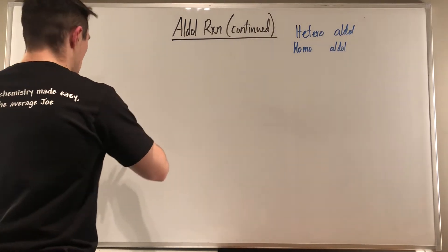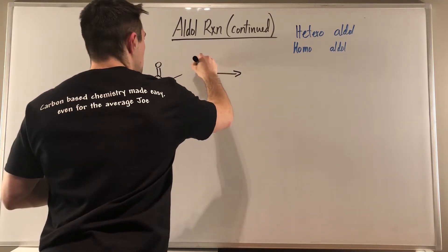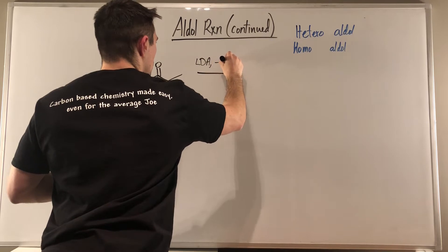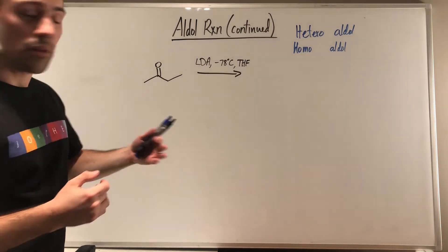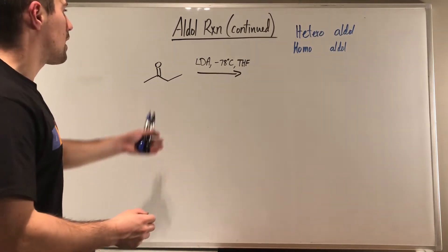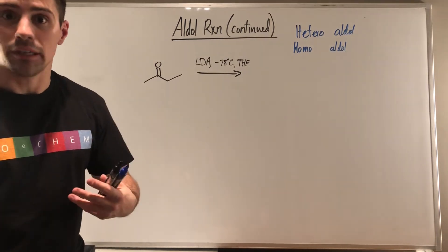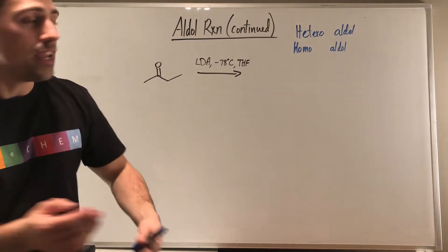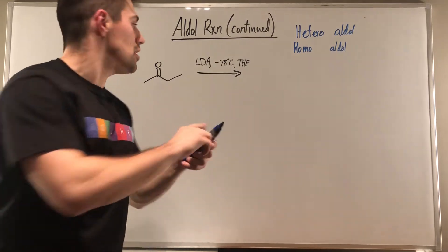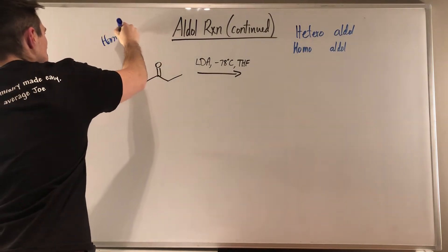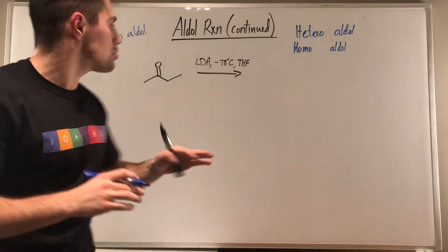So for example, if I gave you butanone — just a four-carbon ketone — and all I give you over the arrow is LDA, negative 70 degrees, THF. Cold conditions, big bulky base — we have kinetic enolate conditions, and this is all I'm giving you. Whenever I've seen a question posed like this, this means you have a homoaldol situation. Homoaldol because this is the only thing you can make an enolate from.